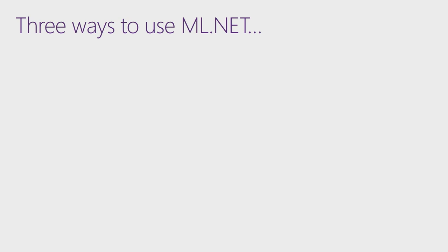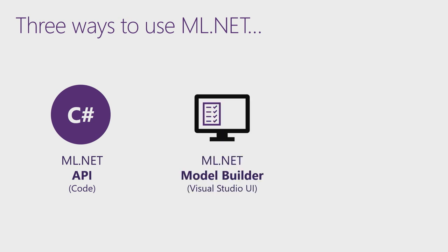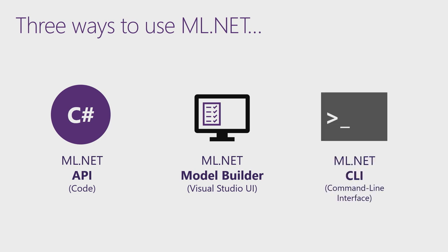There are three ways to use ML.NET. One is to use the plain API in C# or F#, research the docs, go to the samples, write your code, train your model, and consume it. We also have tooling to make it easier, especially when getting started: Model Builder within Visual Studio, or the CLI, which does a very similar thing — training your model and generating code for you.